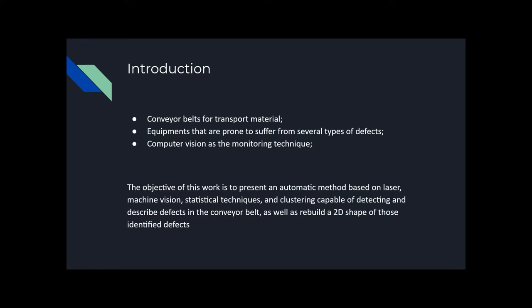Although a lot of defects are monitored using common methods and equipment, computer vision has been a strong candidate for such monitoring tasks. The objective of this work is to present an automatic method based on laser, machine vision, and statistical and clustering techniques that are capable to detect and describe conveyor defects, as well as rebuild a 2D shape of those defects.